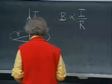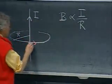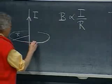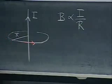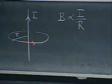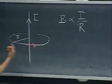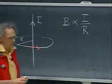By convention, the direction of the magnetic field is given by the right-hand corkscrew rule: rotate this way, and the current goes up.